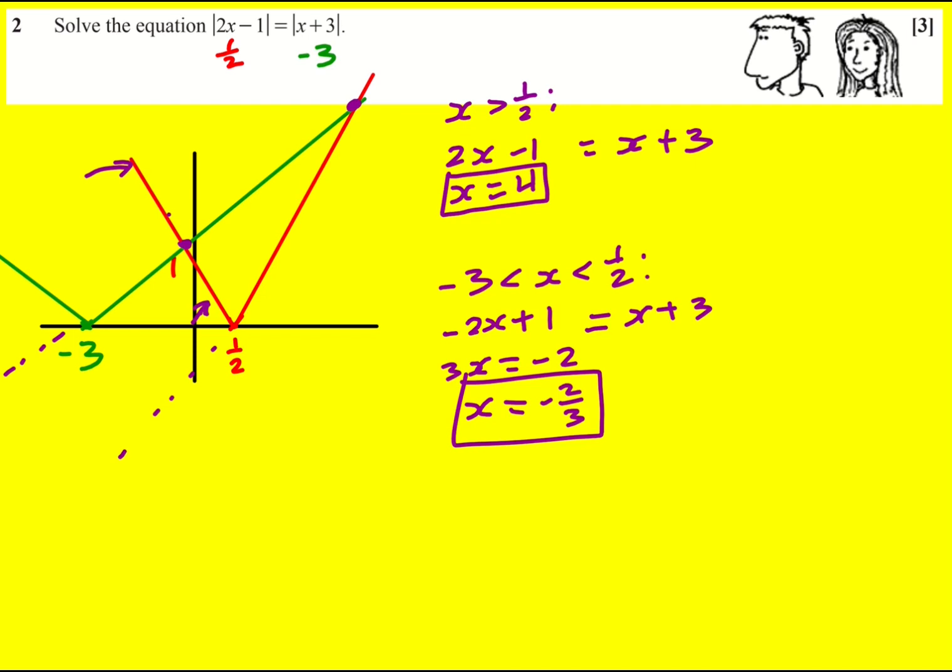You might have learned to check all the regions. For x < -3, both are negative: -2x+1 = -x-3, giving x = 4. But I reject this because x must be less than -3. You can do it without a graph - look at the critical points, between them, and either side, then check your solutions work with the conditions.